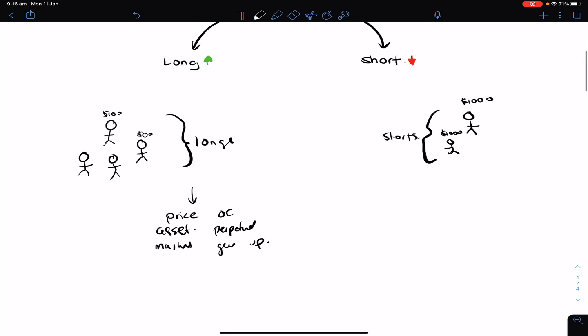Now what happens is that because there are more longs than shorts in this case, the actual price of the asset in the AMM, the actual price of the asset on the perpetual market goes up. So what I mean by that is that the perpetual swap, it is a market of course, and the price of the market can actually deviate away from the actual price. So let's say this is ETH and the actual price is $100. If there are more longs, then the price can actually be higher than the underlying price.